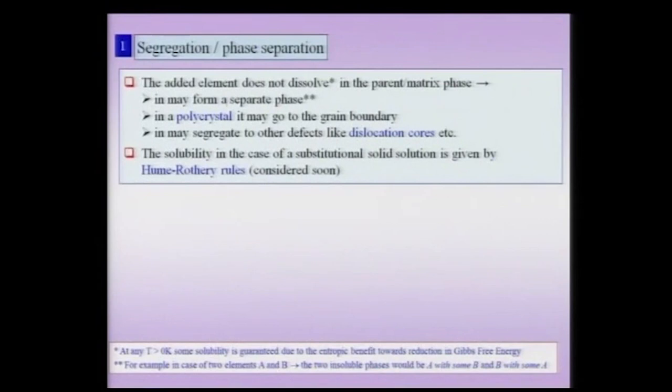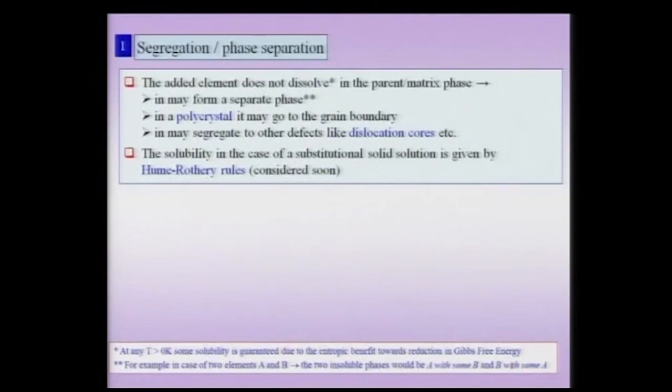If that solubility is very limited, then it may segregate. This segregation can be called a separate phase. And when I mean a separate phase — suppose I have two elements A and B — then the two insoluble phases would be: phase A would have a little amount of B, and phase B would have a little amount of A. Typically you will call them the terminal solid solutions, and you will call them by the alphabets alpha and beta. So there is some little solid solubility which is always guaranteed, and you would call them the terminal solid solutions alpha and beta.